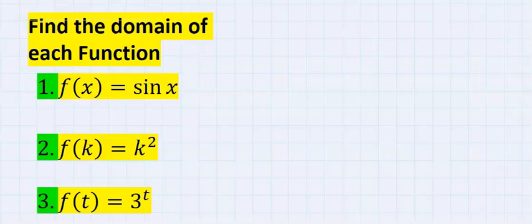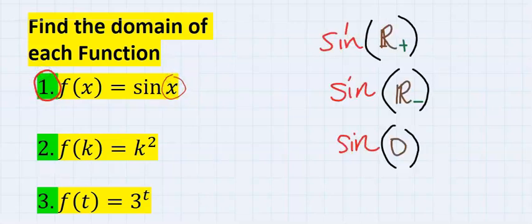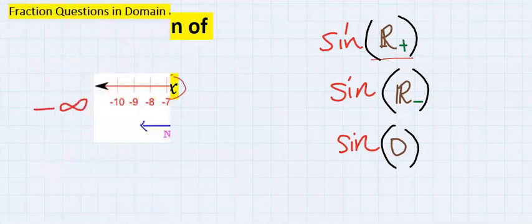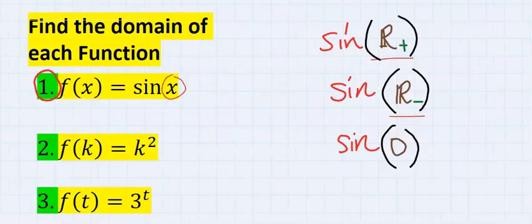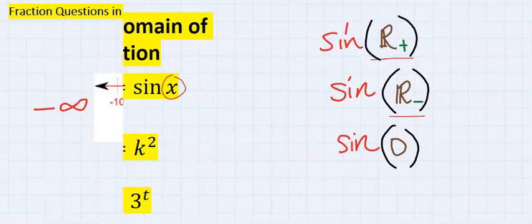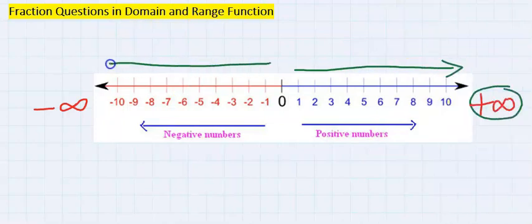Let's consider the domain of each function. Starting with number one, sine is allowed to take any positive real number, that is all numbers towards positive infinity, and also take all negative real numbers, that is numbers going towards negative infinity.